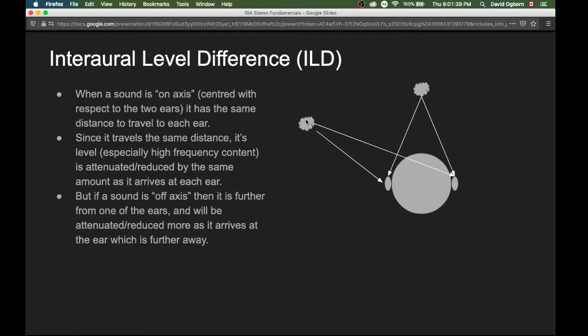But if we have another sound source and it's off axis, like this one over here, then we can see that the geometry changes. It'll be further from one ear than it is from another. As a result, it'll be attenuated or reduced more as it arrives at the ear which is further away. And this is interaural level difference or ILD.